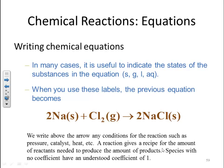We write above the arrow any conditions for the reaction. So we may put pressure, we may put catalysts, we may put heat. That would be a delta symbol.